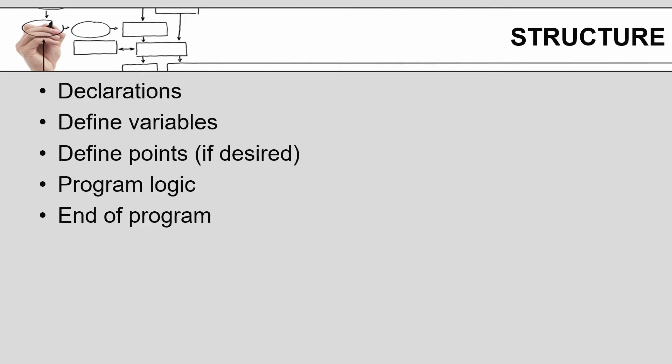The structure of your program in general is: you do your declarations, then define any variables, define your points if you want to, generate your program logic, and then have a specific end of the program.